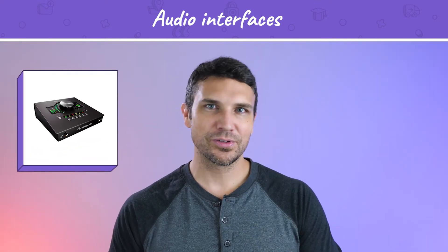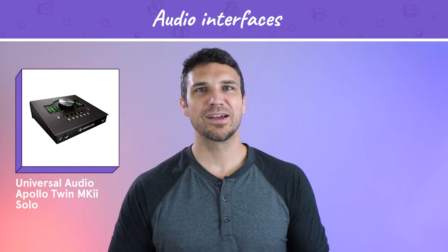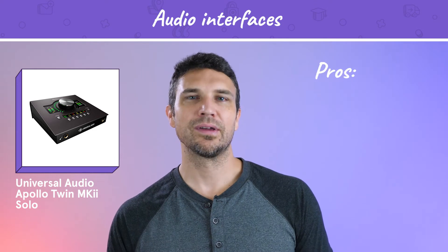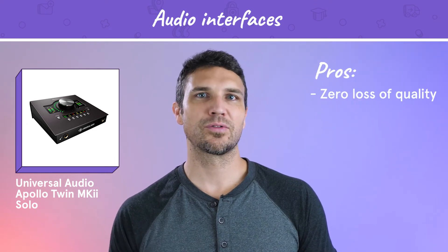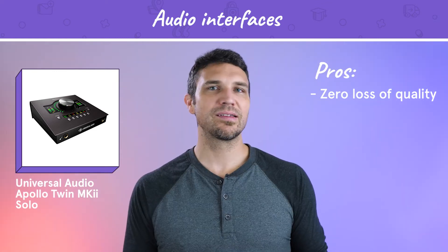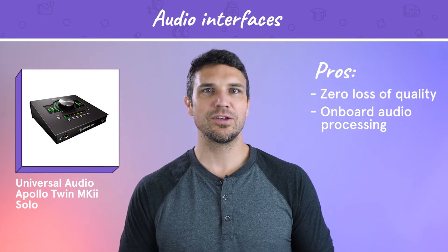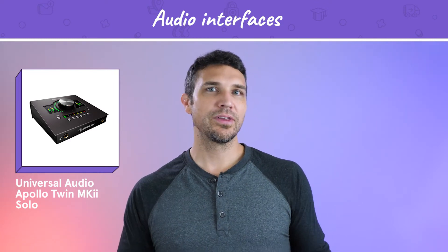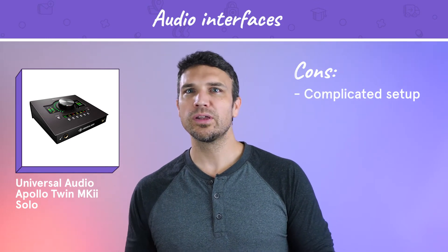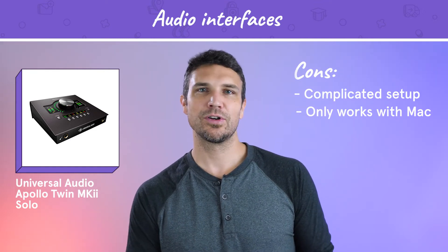On the higher end is the Universal Audio Apollo Twin MK2 Solo. This is the cream of the crop when it comes to converting analog to digital. Because the audio signal is transmitted through Thunderbolt, there's virtually zero loss of quality between what your microphone captures and what your computer receives. It also processes the audio onboard so you don't have to spend any time fixing the EQ or doing post-processing on your computer. On the downside, the initial setup is more complicated and it can only work with Mac computers unless you purchase a special Thunderbolt expansion card for your PC.